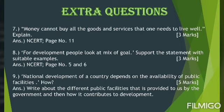Next question: for development, people look at a mix of goals — support the statement with suitable examples. You will get the answer on pages 5 and 6. Question number nine: national development of a country depends on the availability of public facilities — how? For this answer, write about different public facilities provided by the government and how each contributes to development — for example, education through schools and colleges, health care facilities and hospitals, transportation, infrastructure development, and public distribution system. Mention these points and relate each to development.